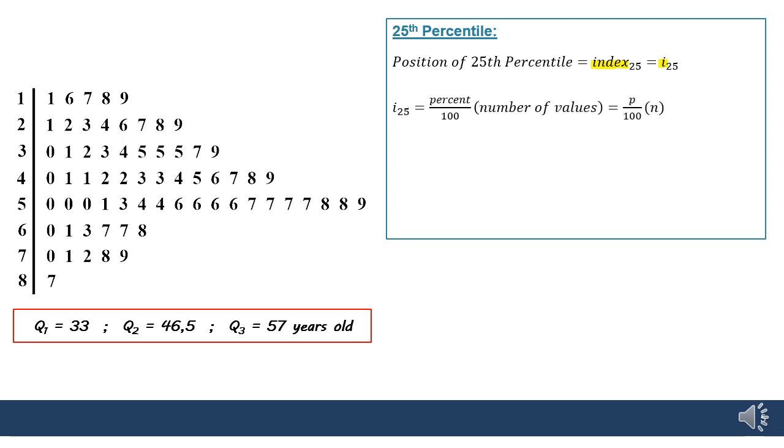Your book gives this formula p over 100 times n. To figure out the 25th percent of the data set, I'm taking 0.25, which is 25%, and multiplying it by the number of values in the set. So 0.25 times 66 tells me that 16.5 is a quarter of the way or 25% of the way through the data.